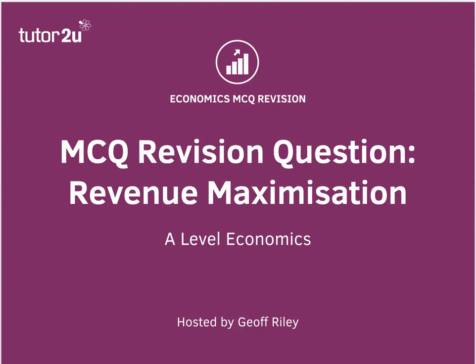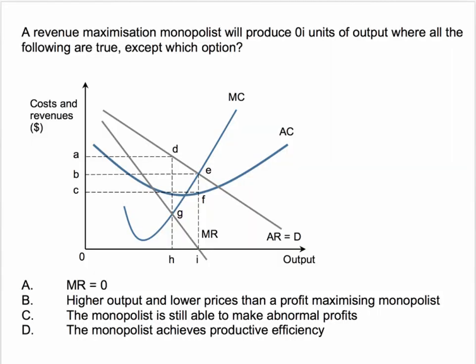Here's a question on revenue maximisation for you to test your understanding of this diagram. We're told a revenue maximisation monopolist will produce OI units of output where all of the following are true except which option? There are four options for you to choose — one of them is correct. Press the pause button and have a go.